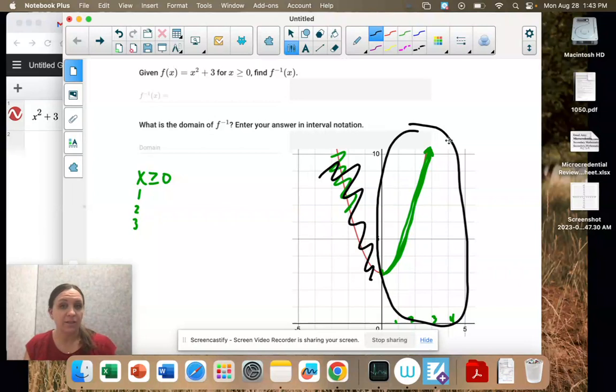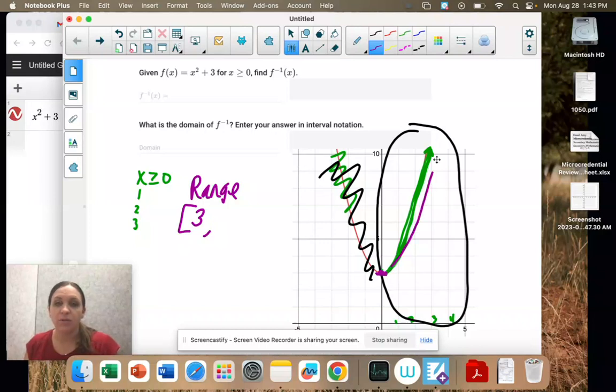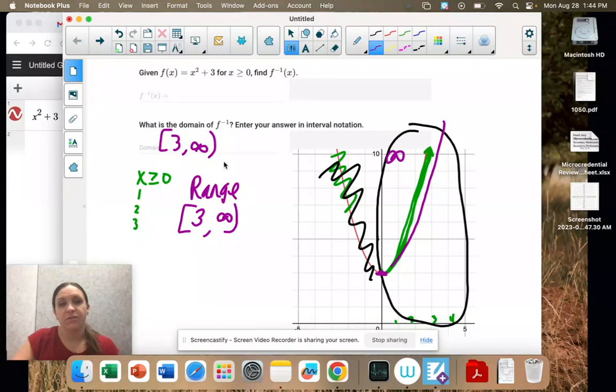So it's saying what's the inverse, and then what's the domain of that. So we could find the domain right now just by finding the range of our original function. So our range starts at 3, it's included, and it goes up towards infinity. So that means that's the domain of our inverse.